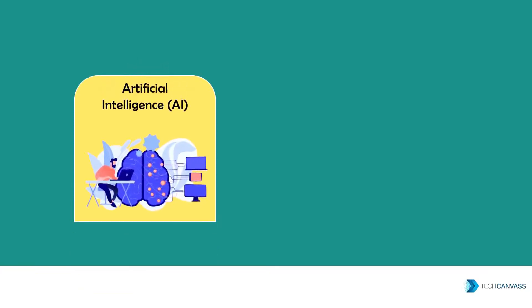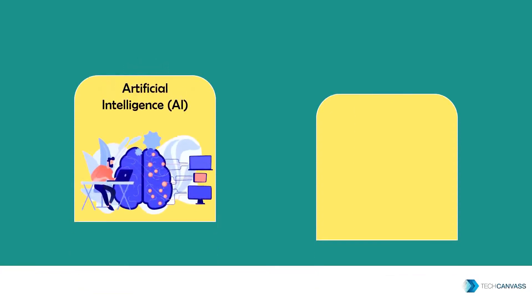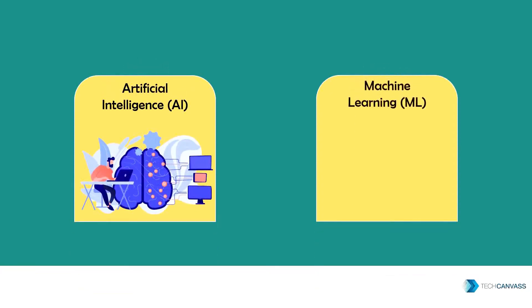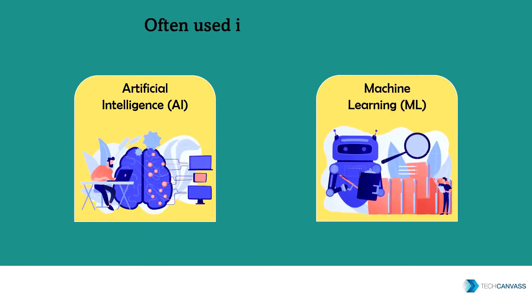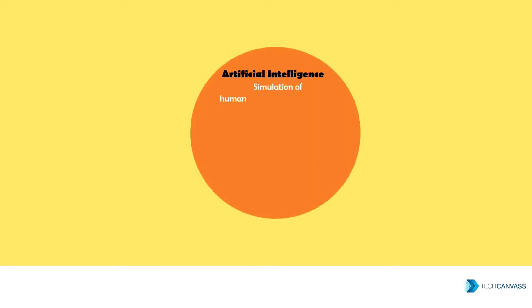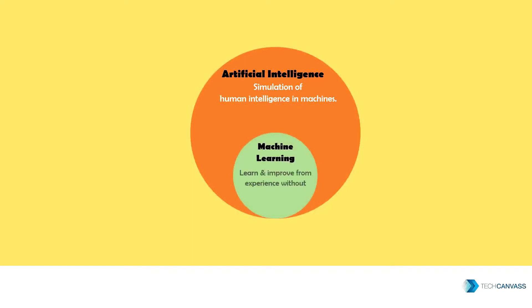Artificial intelligence and machine learning are two extremely popular terms often used interchangeably, but they are not the same. Artificial intelligence is a broader concept of making machines intelligent, and machine learning is an exciting part of AI.